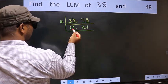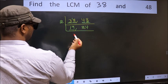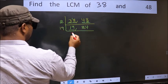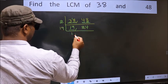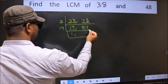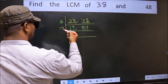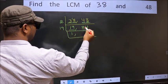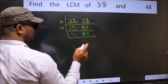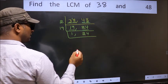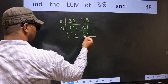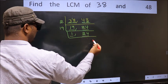Now here we have 19. Since 19 is a prime number, we write 19 once. For the other number 24, it is not divisible by 19, so we write it down as it is. Now we got 1 here, so focus on the other number 24.